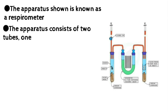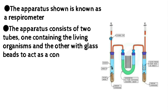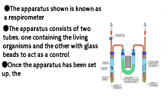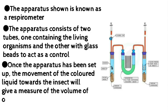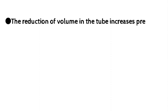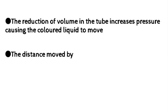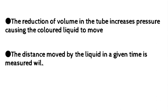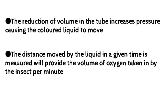The apparatus consists of two tubes: one containing the living organisms and the other with glass beads to act as a control. Once set up, the movement of colored liquid towards the insect gives a measure of the volume of oxygen taken up for respiration. The reduction in volume increases pressure, causing the colored liquid to move. The distance moved by the liquid in a given time provides the volume of oxygen taken by the insect per minute.